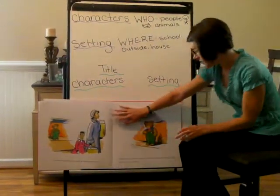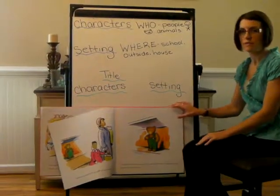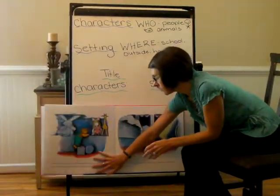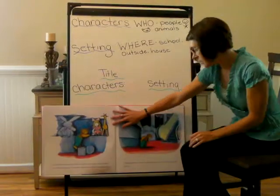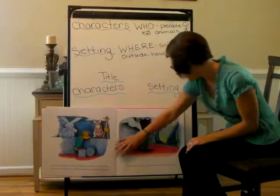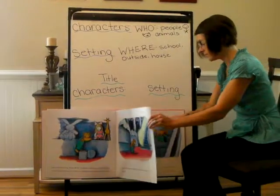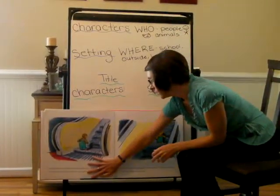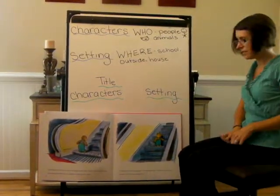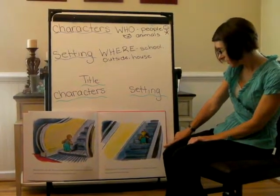Corduroy watched them sadly as they walked away. 'I didn't know I'd lost a button,' he said to himself. 'Today I'll go and see if I can find it.' Late that evening, when all the shoppers had gone and the doors were shut and locked, Corduroy climbed carefully down from his shelf and began searching everywhere on the floor for his lost button. Suddenly, he felt the floor moving under him. Quite by accident, he had stepped on an escalator and up he went. 'Could this be a mountain?' he wondered. 'I think I've always wanted to climb a mountain.'